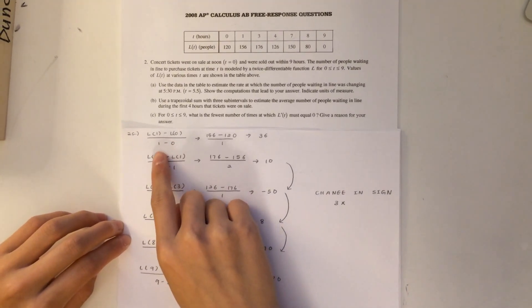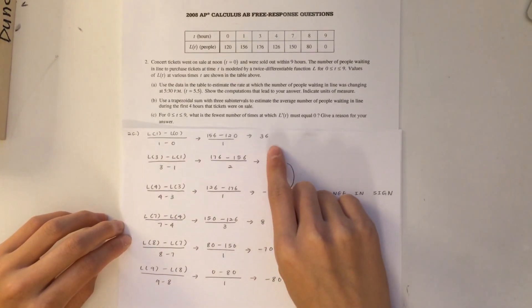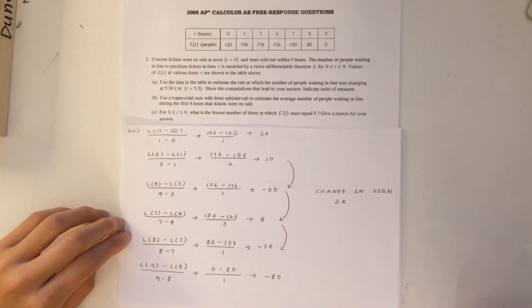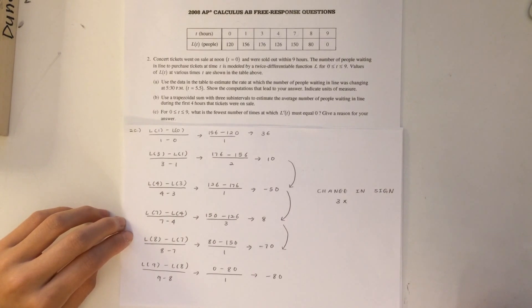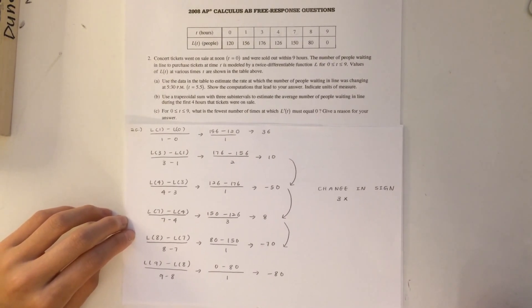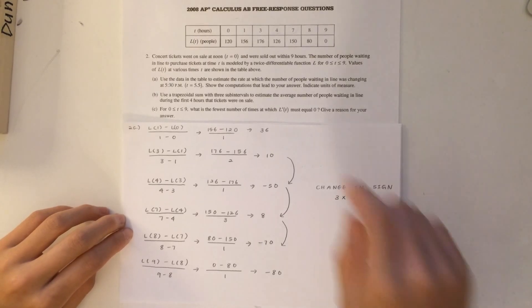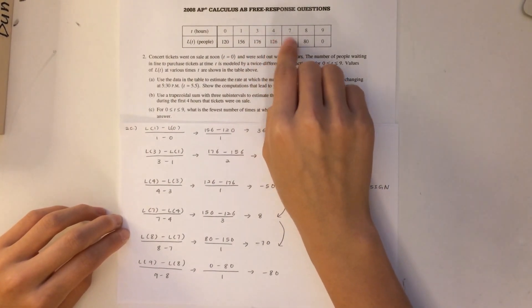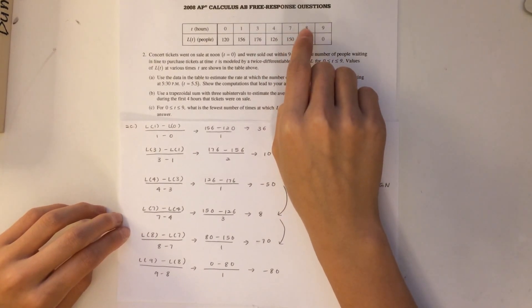Thus, the MVT implies that there is the l prime of t within the interval 0 to 1 that is positive. Repeat these steps for all six intervals, which are 0 to 1, 1 to 3, 3 to 4, 4 to 7, 7 to 8, and 8 to 9.